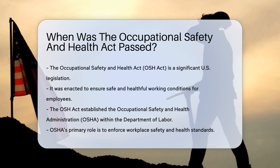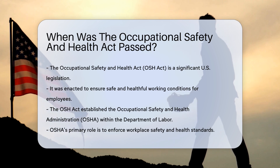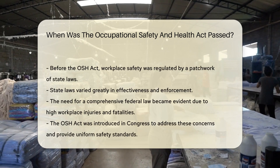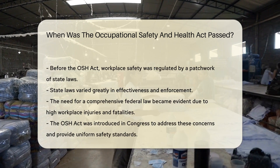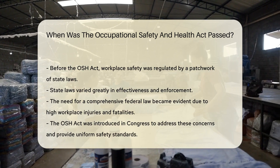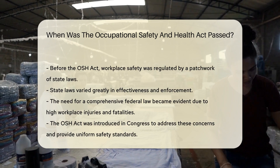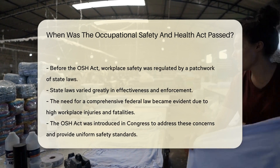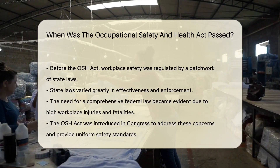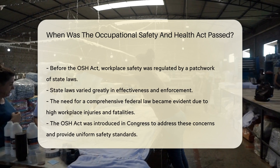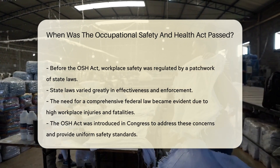OSHA's primary role is to enforce workplace safety and health standards. Before the OSH Act, workplace safety was regulated by a patchwork of state laws. These state laws varied greatly in effectiveness and enforcement. The need for a comprehensive federal law became evident as workplace injuries and fatalities remained high. The OSH Act was introduced in Congress to address these concerns and provide uniform safety standards.